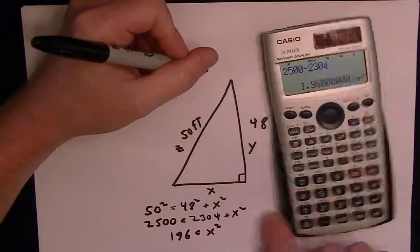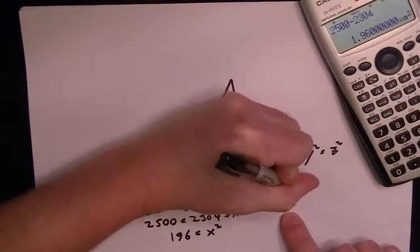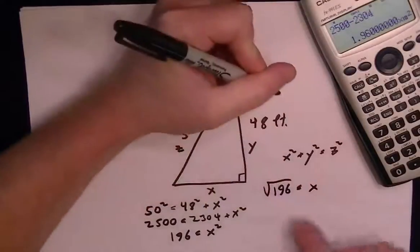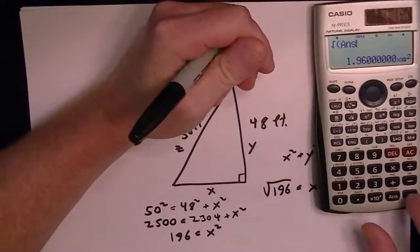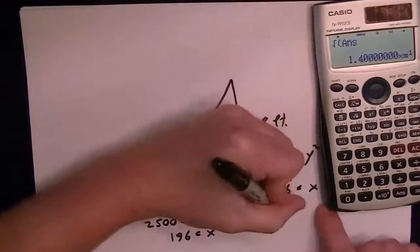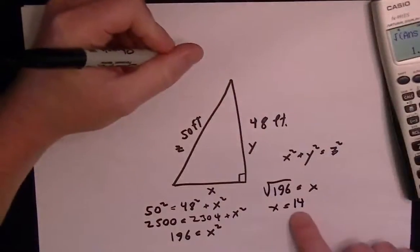Now you have to take the root to get x. In other words, we're taking root 196 is equal to x. So in the calculator you just take the root 196 and that is equal to 14, because 14 squared equals 196.